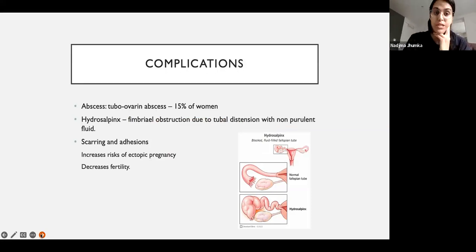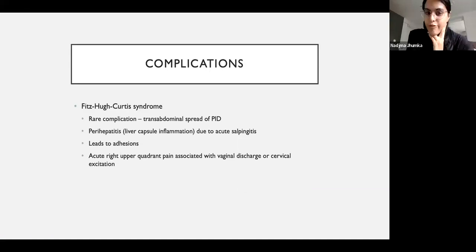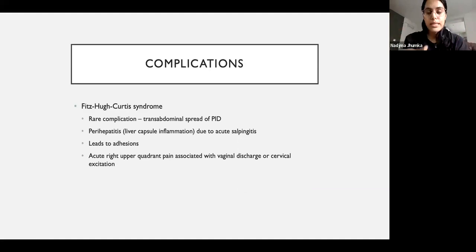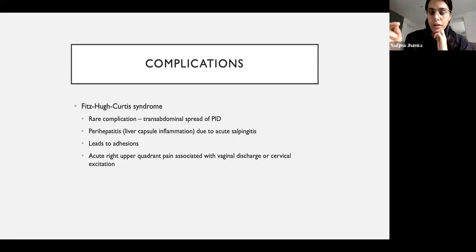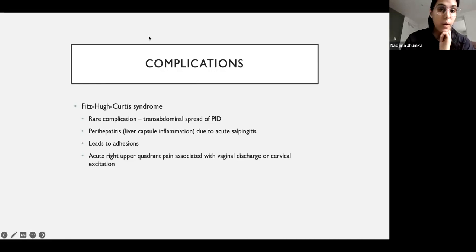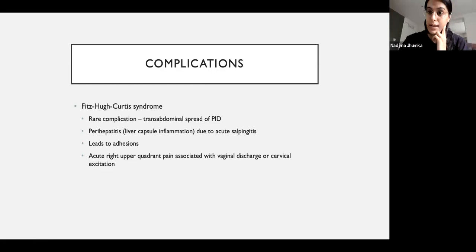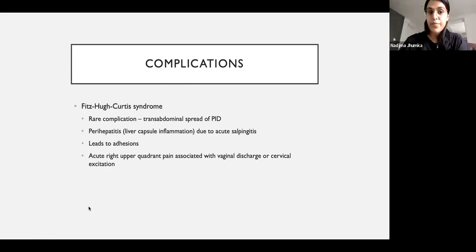Another rare complication is Fitz-Hugh-Curtis syndrome. Because everything is quite open in the pelvis, in some women — very, very rarely — if untreated, the infection can spread up to the liver, causing perihepatitis — inflammation of the surroundings around the liver — with a lot of adhesions in that area. If someone presents with very severe right upper quadrant pain combined with abnormal vaginal discharge or cervical excitation or a diagnosis of PID, it might be worth thinking about this syndrome.